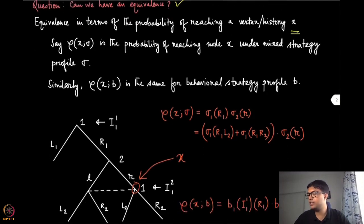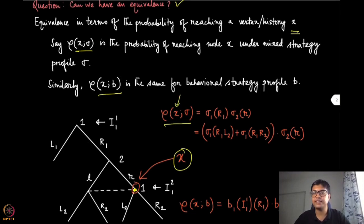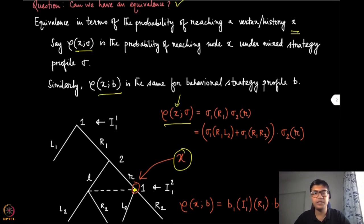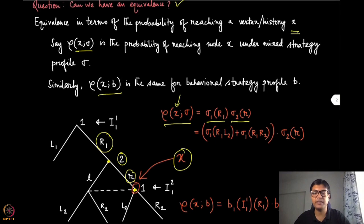Suppose in this example we have a specific node X and we are asking: what is the probability of reaching this particular node under a behavioral strategy versus a mixed strategy? Under the mixed strategy, the probability of reaching vertex X is: we look at the probability of picking R1 to reach this node, then the probability that player 2 picks action R. So this is sigma1(R1) times sigma2(R). Since players always pick strategies independently, we can write this as (sigma1(R1,L2) + sigma1(R1,R2)) times sigma2(R).